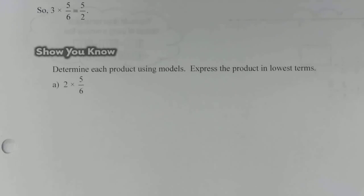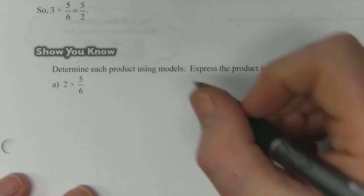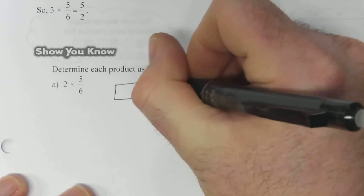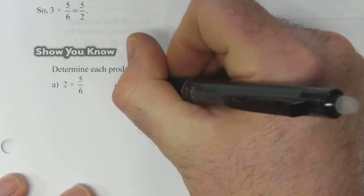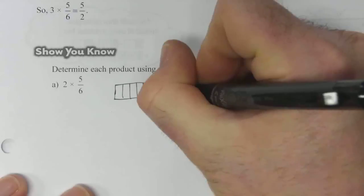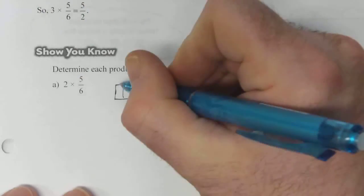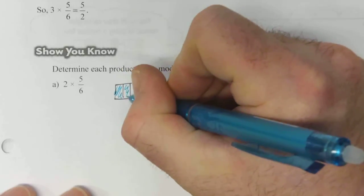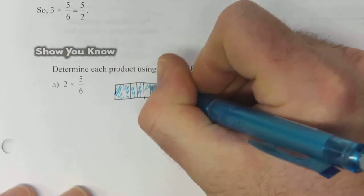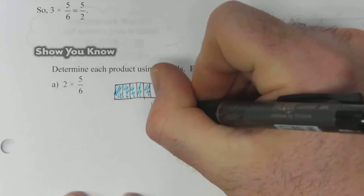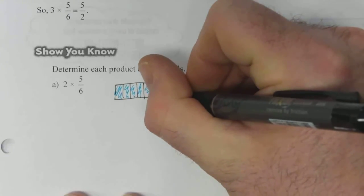So you know, we need to determine each product using models and express the product in lowest terms. So 2 times 5/6, we're going to draw some strips. There's one, and let's see, we'll shade it. That's 5/6 shaded.